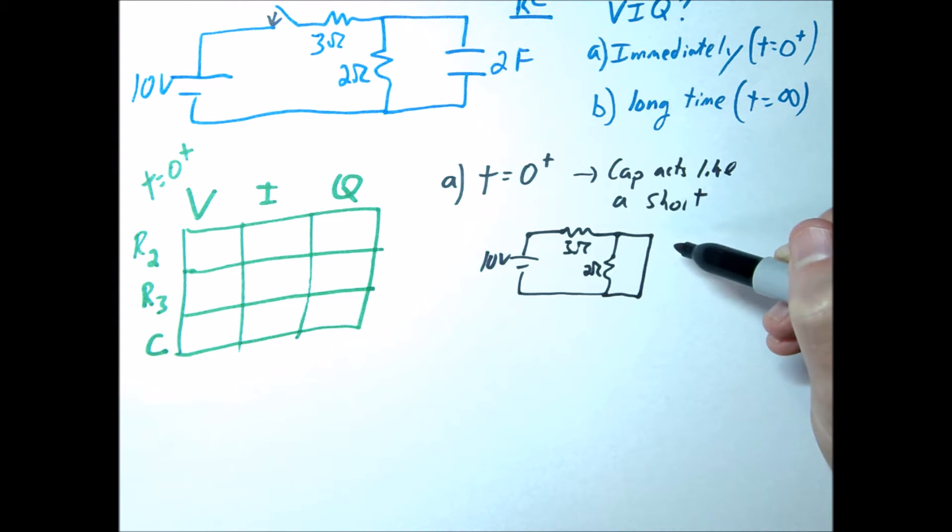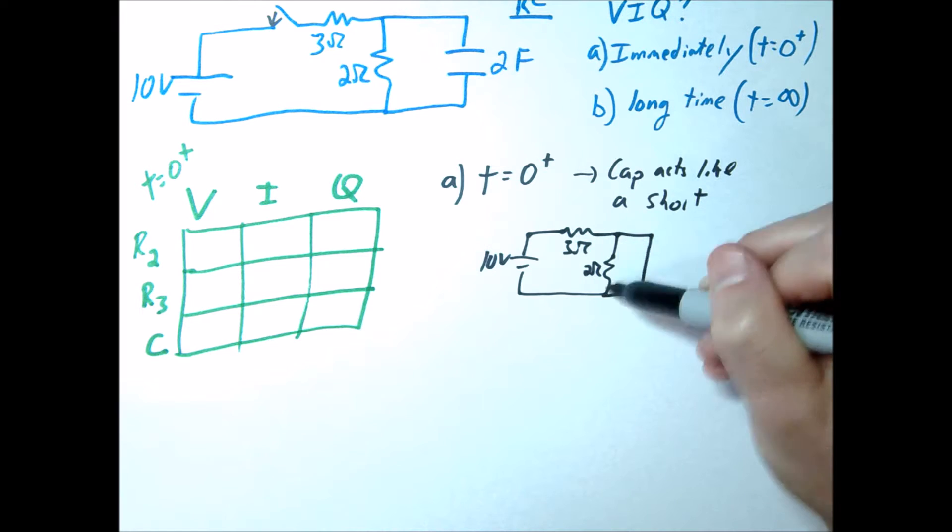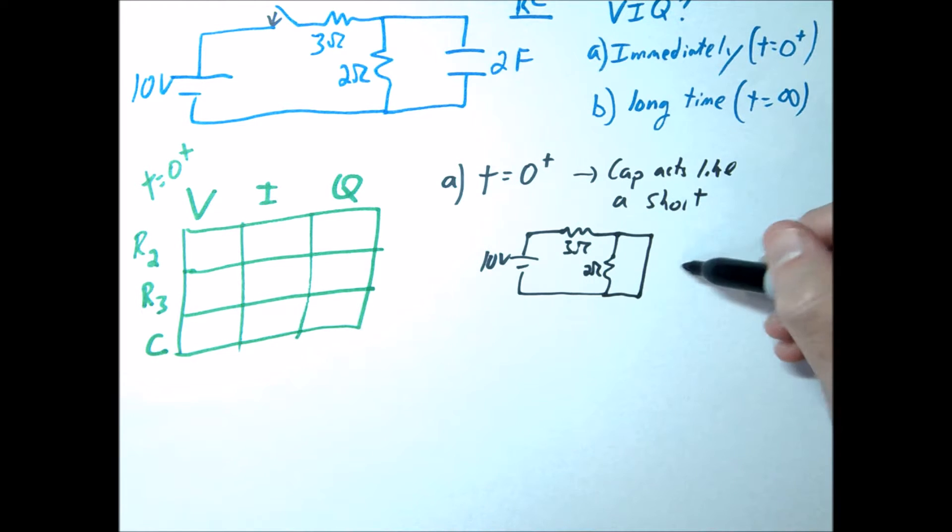And so immediately when you close this switch, no current is going to go through this 2 ohm resistor. In fact, this circuit effectively looks like this: 10 volts, 3 ohms. That's what our circuit is going to look like here.